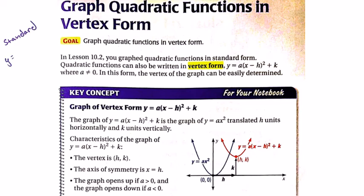I'm going to write this out for us. We have standard form, which is y equals ax squared plus bx plus c. And we just covered intercept form, which is y equals a times the quantity x minus p times x minus q. Well, guess what? There's a third form that these crazy quadratics can be written in, and that is vertex form: y equals a times the quantity x minus h squared plus k.